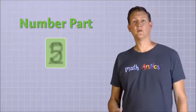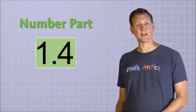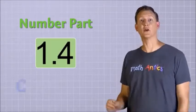The number part is pretty simple. It's just a number, like 2 or 5 or 1.4. And the number part has an official name. It's called the coefficient.